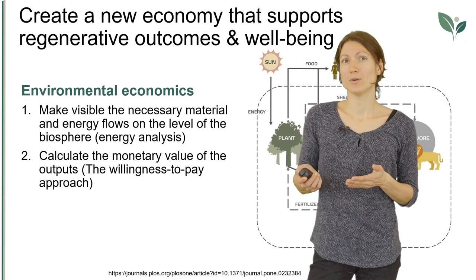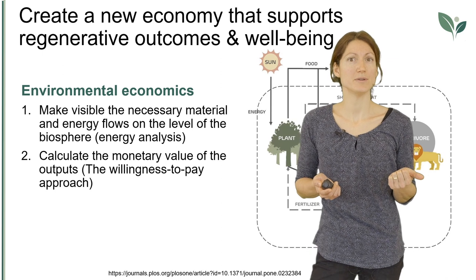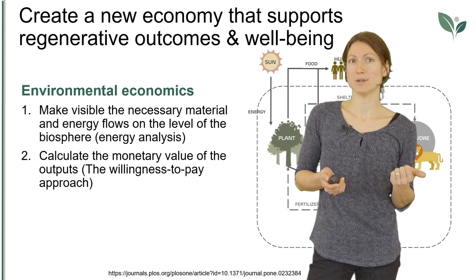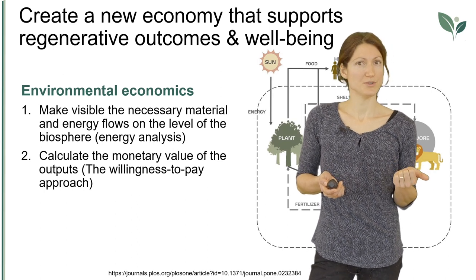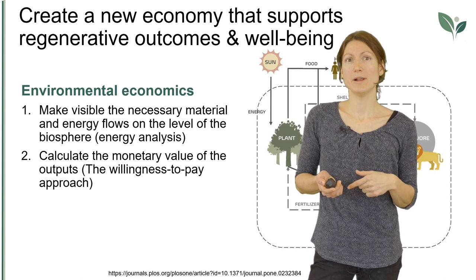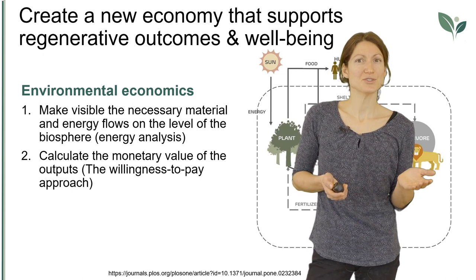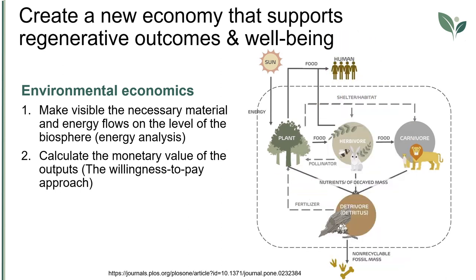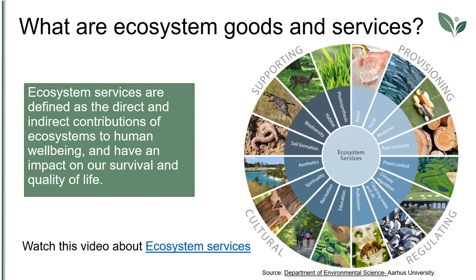Many such externalities can be found in the agricultural sector, affecting three areas: human health and safety, farmland and rural environment, and social and economic impact. In the 1960s, environmental economics sought to take human activities into account in a much more direct way within the dynamics of ecosystems. The environmental economics approach had two goals: first, to make visible the necessary material and energy flows at the level of the biosphere; and second, to calculate the monetary value of outputs by taking into account the relationship between human well-being and the environment. These goods were named ecosystem services — the direct and indirect contributions of ecosystems to human well-being.